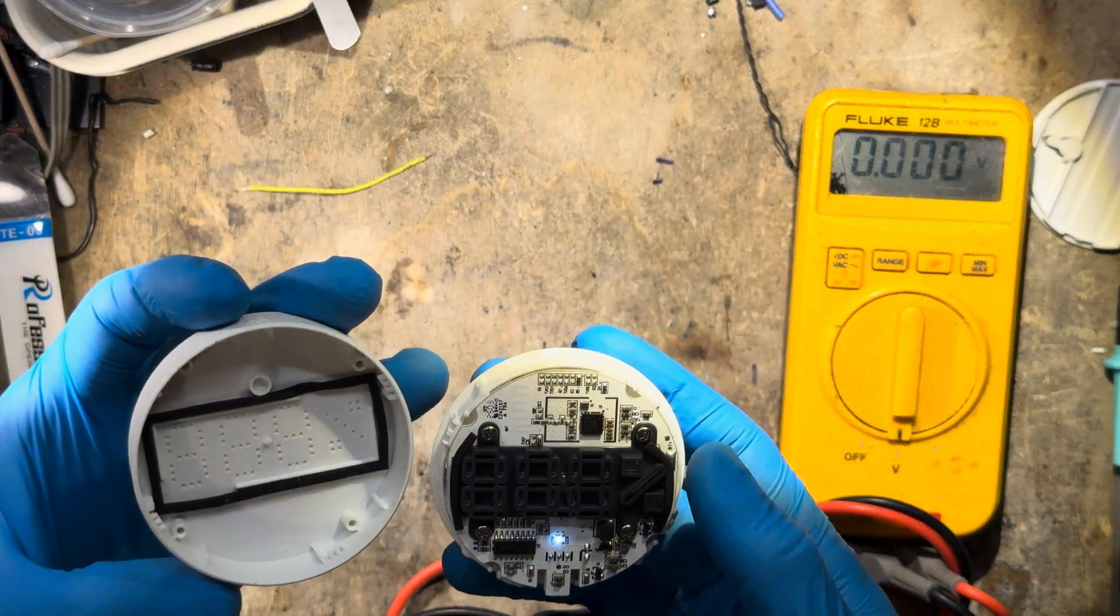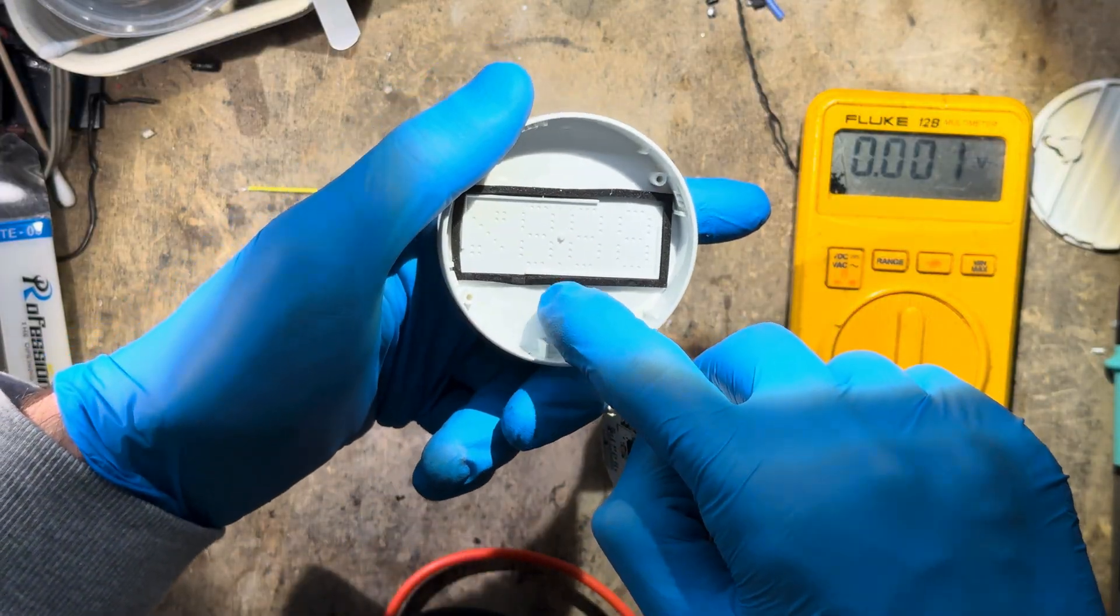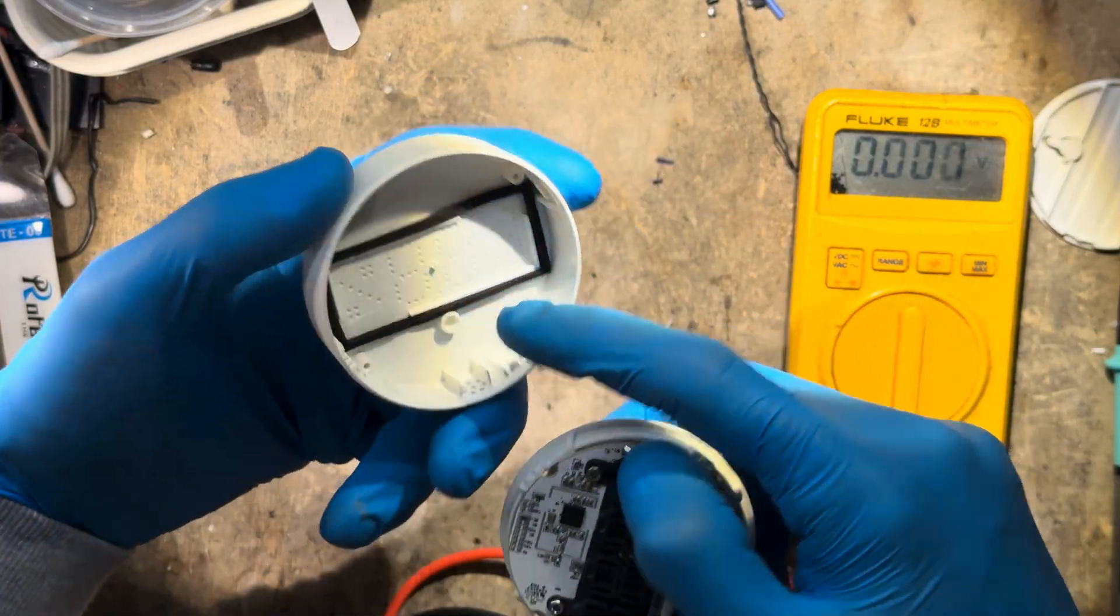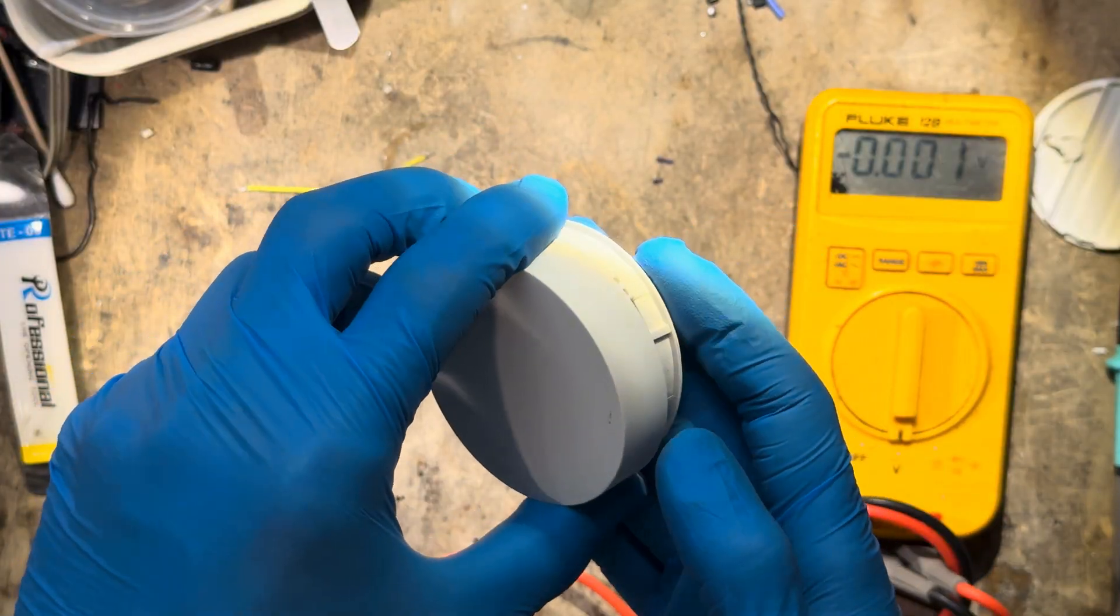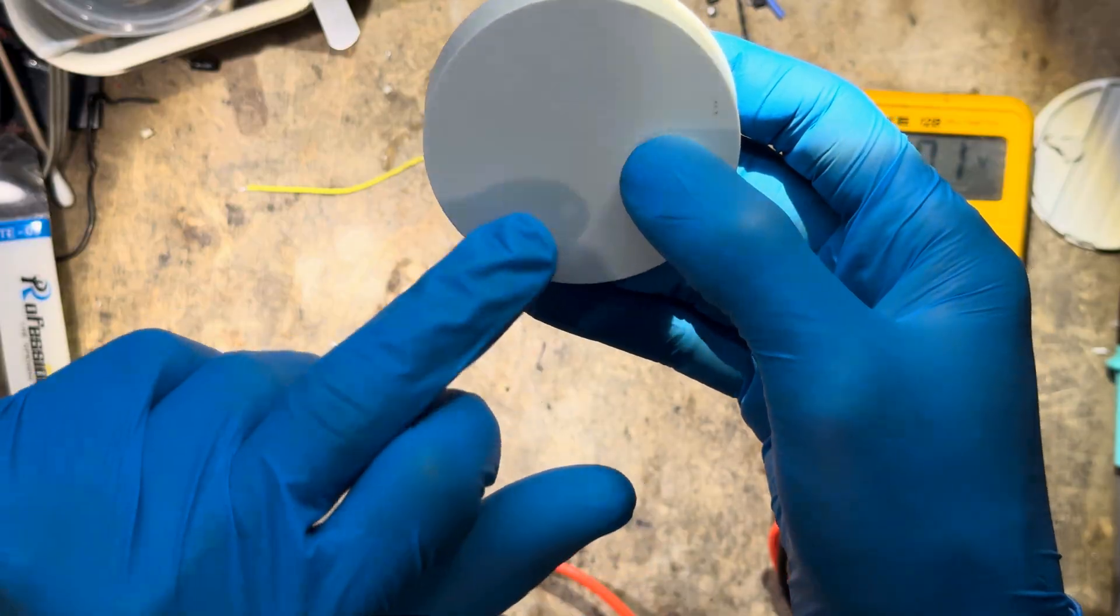If you put the top cover back on, which is this way, they also made a little channel here for the front light of this sensor as well. So this goes on like this. You can now see the pulsating white light.